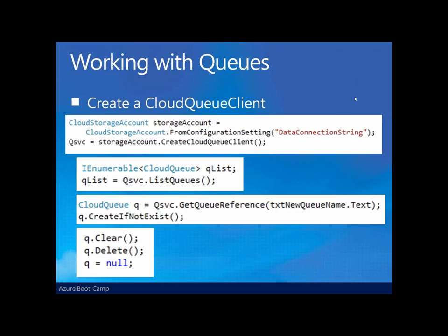The first thing we're going to need to work with any storage type in Azure is what's known as the cloud storage account object. We get the cloud storage account object from the configuration setting, using that data connection string configuration parameter that we saw in our service configuration and service definition file. That might be in development using development storage, or it might be set up to use the account name, key, and endpoint if we're actually running in the cloud.